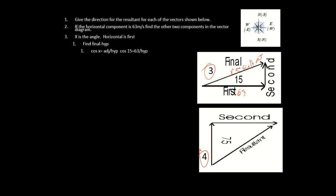We're doing number three and four. What we have is we need to find this angle. I've got 63 on the horizontal and I want to find the resultant. Cosine — this is going back to grade 10 math — 15 degrees is here, the adjacent side is attached to the angle, so it's adjacent over hypotenuse. Rearranging: hypotenuse equals 63 over cosine 15, and the answer is 65.2.